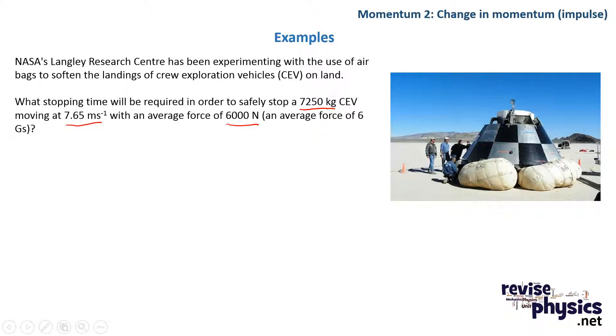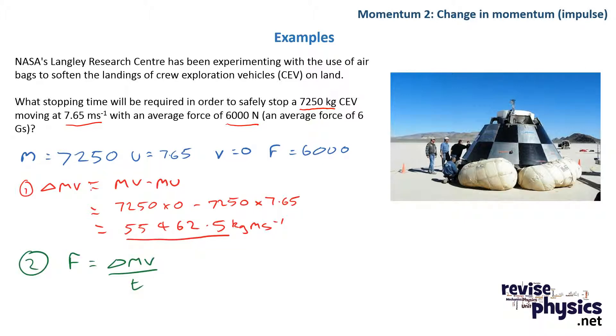Well, if we're going to find a force, we know that force is changing momentum over time, so we're going to need to find a change in momentum first. Substituting our figures into our change in momentum equation, we get a change in momentum of 55,462.5 kilogram meters per second. Now we can put that momentum there into our force equation, putting our time, rearrange it to get time, and if we put our numbers in, we end up getting a time needed to safely land of 9.24 seconds.